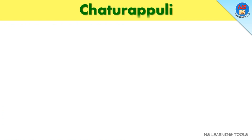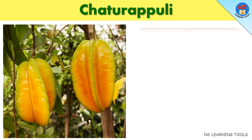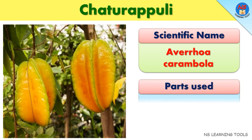Chaturipuli. Scientific name: Averarhoa carambola. Parts used: Fruit.